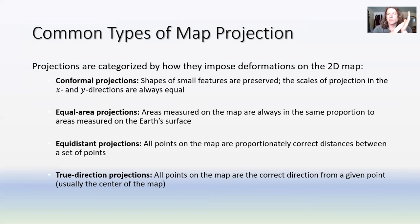I'll show you some examples in Arc, that's probably the best way to learn it yourself. Some other types we're not going to focus on so much are equidistant projections, where all points on a map are proportionally correct between a set of points, and true direction projections, where all points on the map are correct direction from a given point, usually the center of the map.